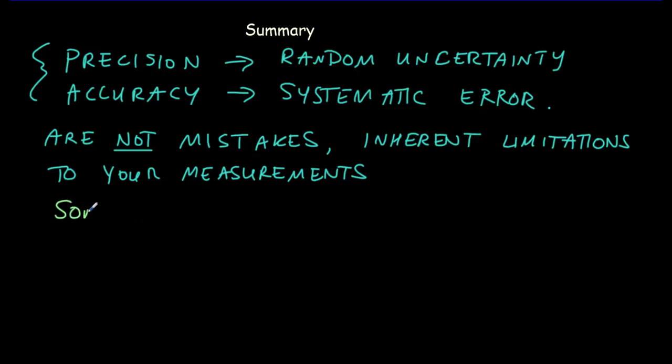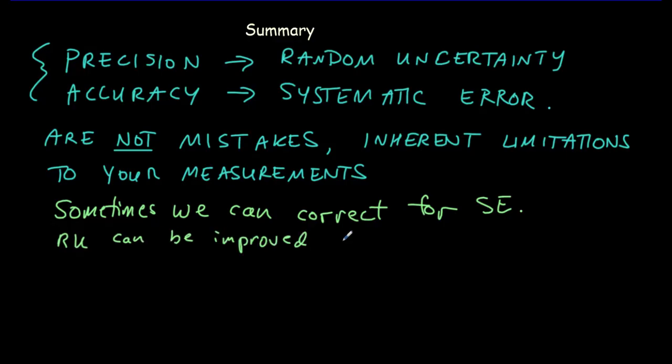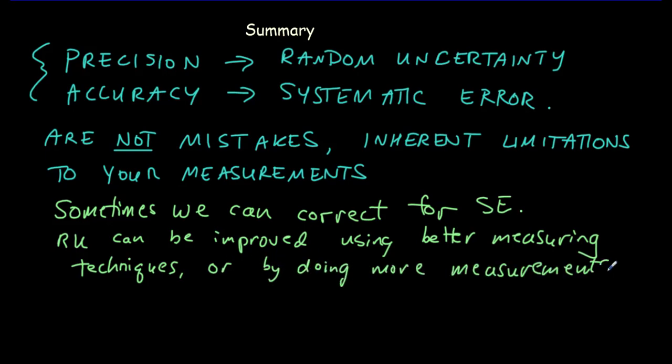We said that sometimes we can correct for systematic error. And we said that random uncertainty can be improved using better measuring techniques or by doing more measurements. However, doing more measurements has no effect on the systematic error. So more measurements has no effect on systematic error.